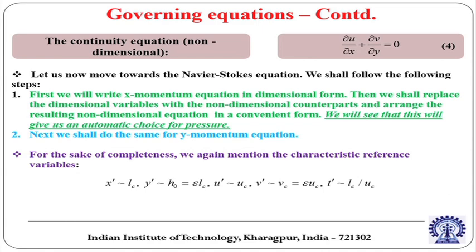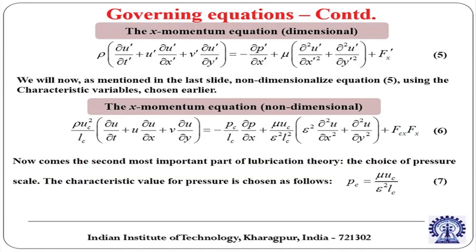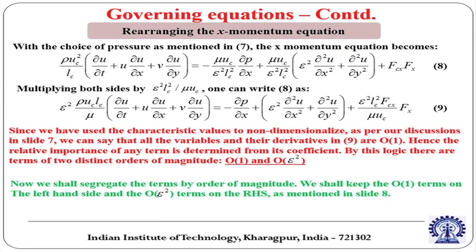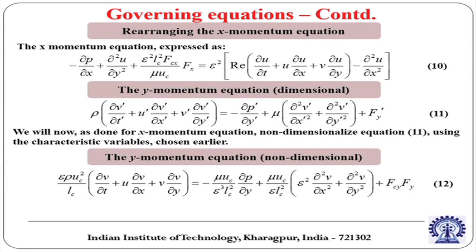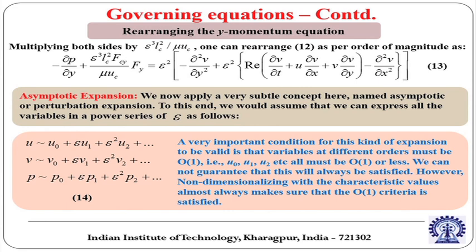The analysis of the x momentum equation gives a choice of the pressure scale which scales with 1 by epsilon squared. We can rearrange the x momentum equation and similarly do analogous steps for the y momentum equation, then use an asymptotic expansion. This asymptotic expansion can be done provided that all variables of different orders must be of the order of 1, which is ensured by non-dimensionalization.